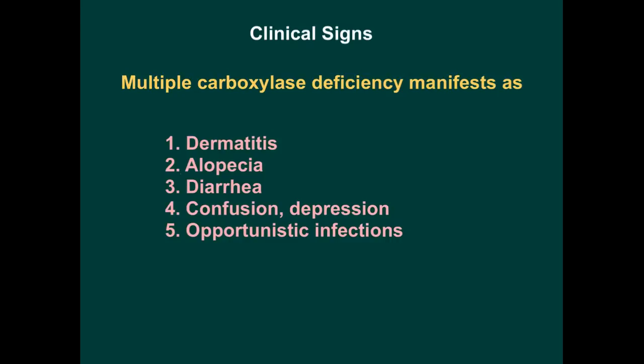Hair follicles can be affected leading to loss of hair, called alopecia. Intestinal mucosa can also be affected, giving rise to diarrhea. The central nervous system can be affected, giving rise to confusion, depression, and lethargy — various neurological signs. The immunological system can also be affected, leading to opportunistic infections like fungal infections.